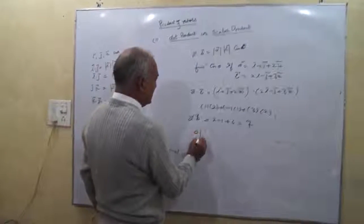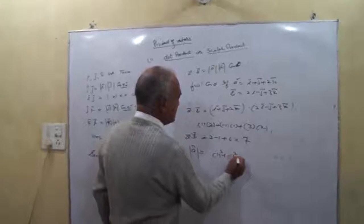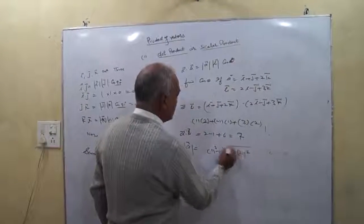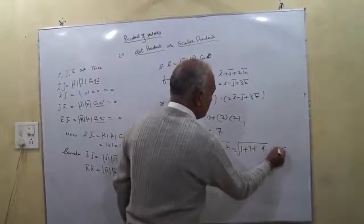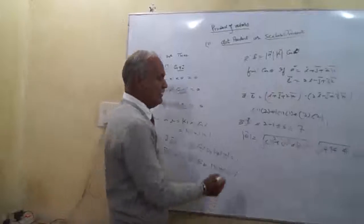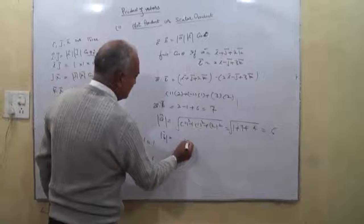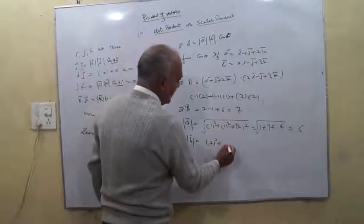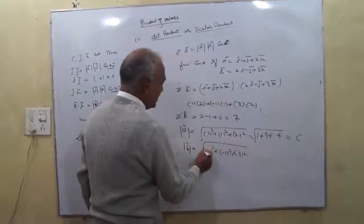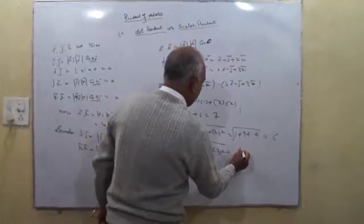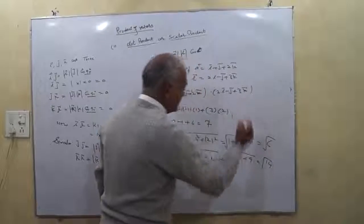What is |A|? The magnitude of A equals the square root of the coefficient of I squared, plus coefficient of J squared, plus coefficient of K squared. This equals the square root of 1 plus 1 plus 4, which is the square root of 6. For |B|: the coefficient of I is 2 squared, coefficient of J is minus 1 squared, coefficient of K is 3 squared. So |B| equals the square root of 4 plus 1 plus 9, which is the square root of 14.